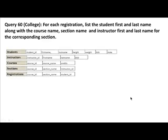So here's the schema. We're saying for every registration, list the student first and last name. We can get that because registration tells us what the course is, what the section is, and who the student is. So we can join with the student table to get that. Along with the course name — we can join registrations with the course table on course ID to get the course name. The section name is there in registration itself, so there's no problem.